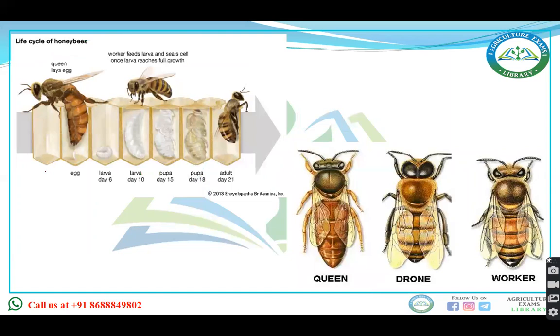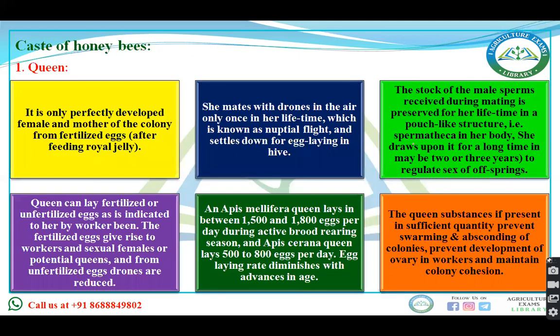You can see the life cycle of honeybee — queens, drones and workers. The queen is a perfectly developed female developed from fertilized eggs. After developing from fertilized eggs, they feed on royal jelly. The queen will mate with the drones only once in her lifetime, and that is known as the nuptial flight.